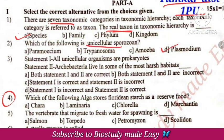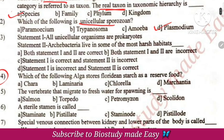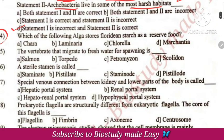Unicellular sporozoan is Plasmodium. Statement 1: All unicellular organisms are prokaryotes — this is incorrect because there are unicellular eukaryotes. These bacteria live in the most harsh habitats. So, statement 1 is incorrect. Statement 2 is correct.